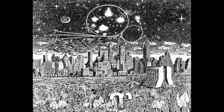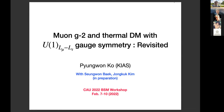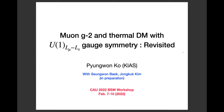[Moderator]: Thank you very much for your nice talk and discussion. Let's move on to the next speaker, Byung-Hun Ko from KIAS. The title of the next talk is 'Muon g-2 and Thermal Dark Matter with the U(1) L_mu minus L_tau Gauge Symmetry, Revisited.' Please go ahead. [Ko]: Thank you to the organizers for the invitation. Today I'm going to talk about muon g-2 and thermal dark matter with the L_mu minus L_tau U(1) gauge symmetry. I will briefly introduce this gauge symmetry including my previous works, the muon g-2 constraint, and the L_mu minus L_tau charge of dark matter.